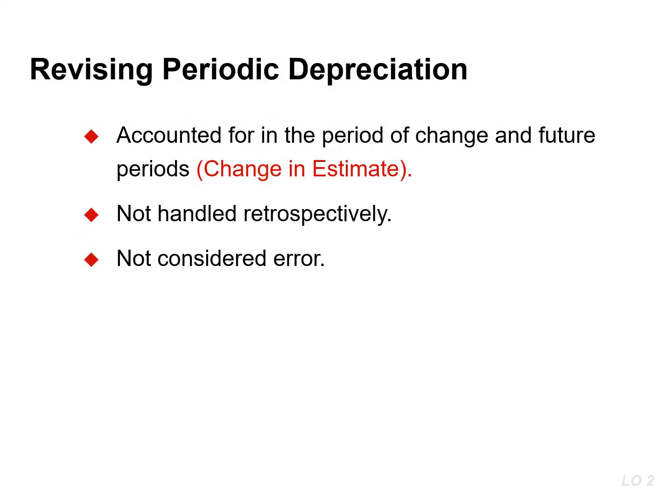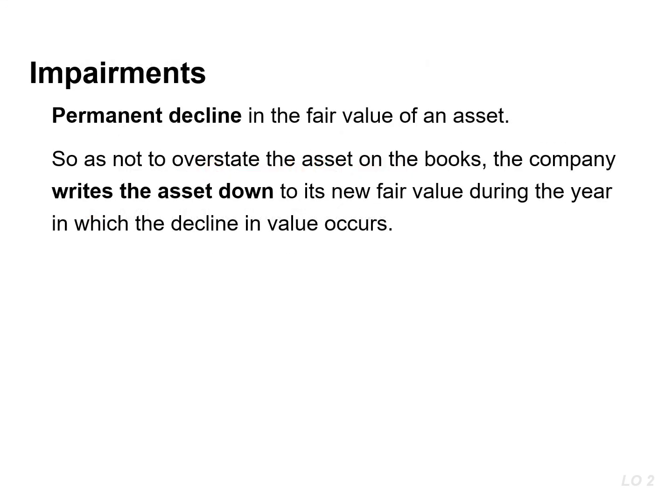When a change in an estimate is required, the company makes the change in current and future years, but not to prior periods — it simply revises depreciation expense for the current and future years. A permanent decline in the fair value of an asset is referred to as an impairment. If this occurs, the company records a write-down in the year in which the decline in value occurs.